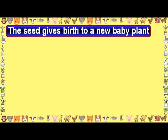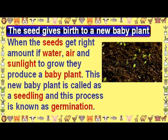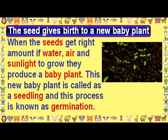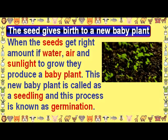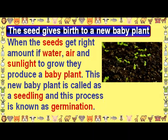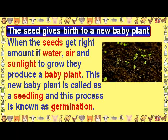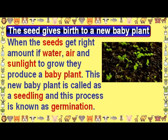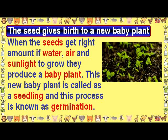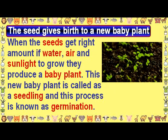The seed gives birth to a new baby plant. When the seeds get the right amount of water, air and sunlight to grow, they produce a baby plant. This new baby plant is called a seedling, and this process is known as germination.